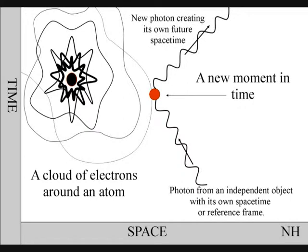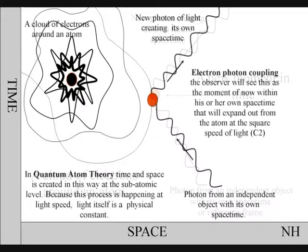In quantum atom theory, each individual atom of our universe creates time and space in a very simple process, using photons of light and electrons.